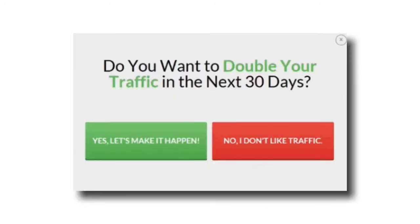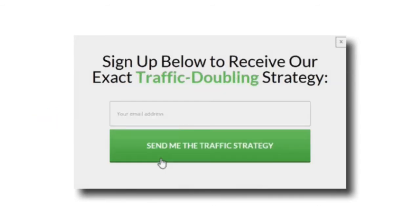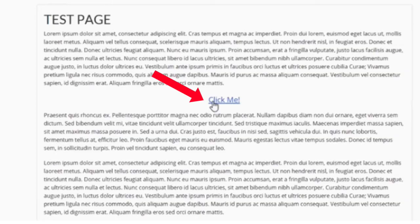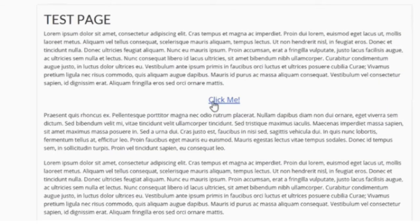Here's another variation of a multi-step form. It asks one simple question: do you want to double your traffic in the next 30 days? It gives you a clear choice of yes or no. If you click on the yes option, it switches to the actual opt-in offer. If you click on no — 'I don't like traffic' — then it simply closes the form.